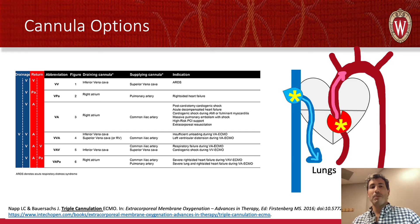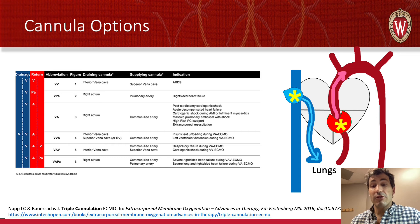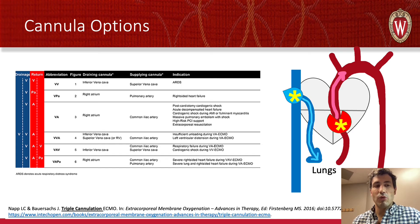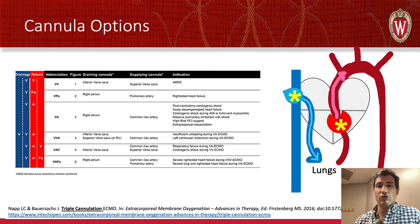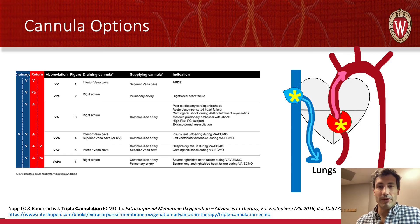This basic drawing can be used for a host of cannula considerations and options. A published table details all the different cannulation sites and considerations. Central cannulation — shown with pac-man drawings — solves a lot of north-south syndrome because you're cannulated so proximally. Other cannulation strategies are shown, but if you know the basic drawing of a heart with the venous and arterial sides, you can work through answers to all of these scenarios.